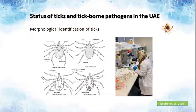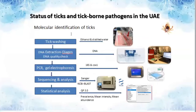We performed morphological identification using the Walker key. For molecular identification, the first step was tick homogenization, then DNA extraction and quality check. For identification, we conducted PCR using the primers 16S and COX-1. After that, Sanger sequencing was done, and following statistical analysis, we calculated the prevalence, mean intensity, and mean abundance.